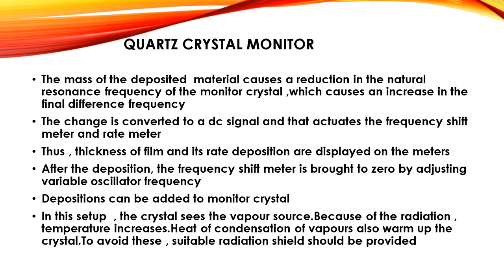The reduction in resonance frequency causes an increase in the final difference frequency. This change is converted to a DC signal that actuates the frequency shift meter and rate meter, thus displaying the thickness of the film and its rate of deposition. After deposition, the frequency shift meter is brought to zero by adjusting the variable oscillator frequency. Since the crystal sees the vapor source, radiation and heat condensation of vapors can warm up the crystal; suitable radiation shields should be provided.